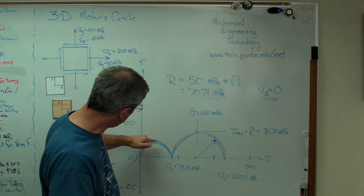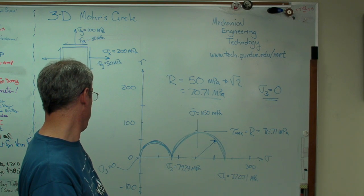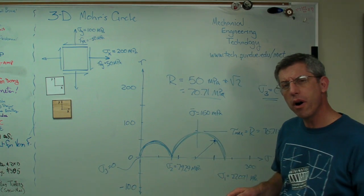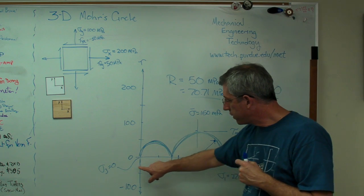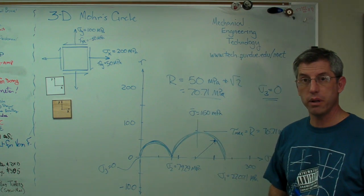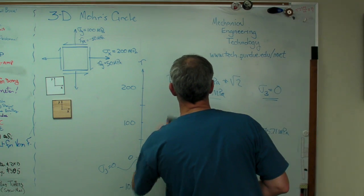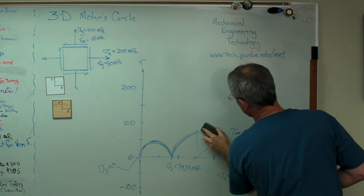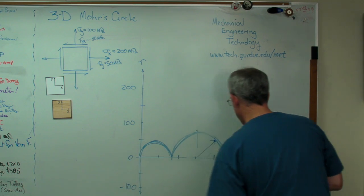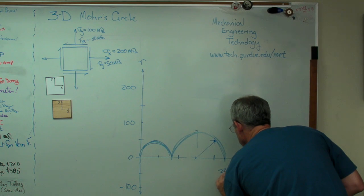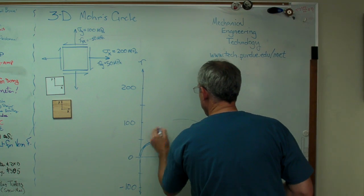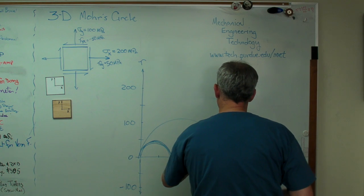Now, the tau max on this circle is half the distance between sigma 2 and sigma 3. That distance is 79.29. So the maximum shear stress on this circle, half of that, is 39.65 more or less. If I can draw Mohr circle between sigma 2 and sigma 1 and sigma 3 and sigma 2, it makes sense that I ought to be able to draw one between sigma 3 and sigma 1, and I can. So let's remove some of the excess stuff here. Let's draw that circle in and see what we get. That was 220.71 megapascals. And sketch in this third Mohr circle now.